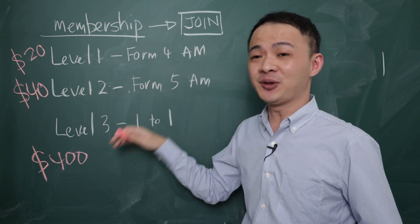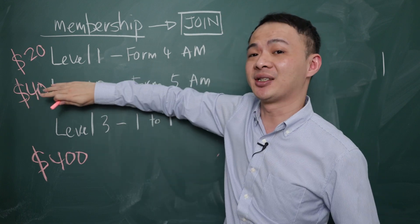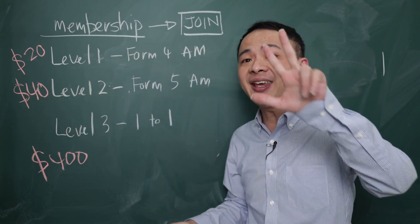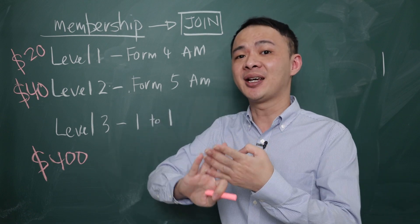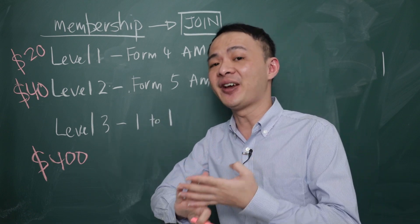So for Form 5, if you sign up for this package, which is the level 2 one, you should have 8 hours per month, which is 4 hours for Form 4 classes and 4 hours for Form 5 MF classes.